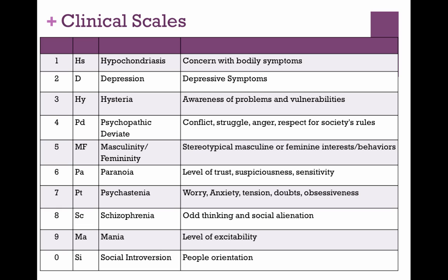Scale five is the masculinity-femininity scale. This has been on the test for many years. It was originally meant to identify homosexuality — it does not work for that and is not built like that. Now we would say it just measures those stereotypical kinds of interests associated with men and women.